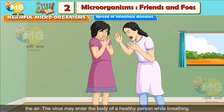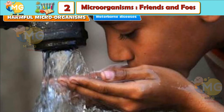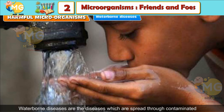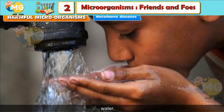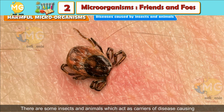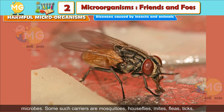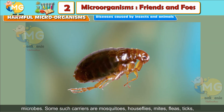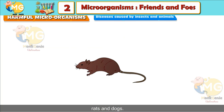Waterborne diseases are diseases which spread through contaminated water. Diseases caused by insects and animals: There are some insects and animals which act as carriers of disease-causing microbes. Some such carriers are mosquitoes, house flies, mites, fleas, ticks, rats and dogs.